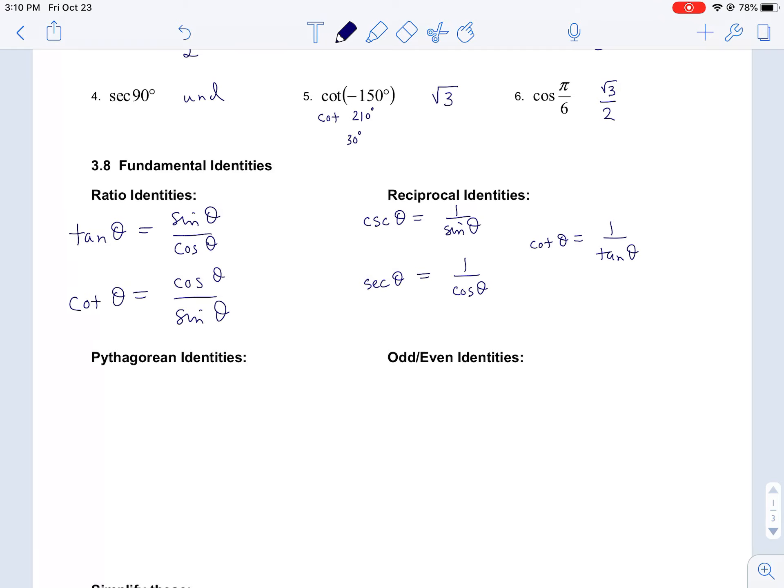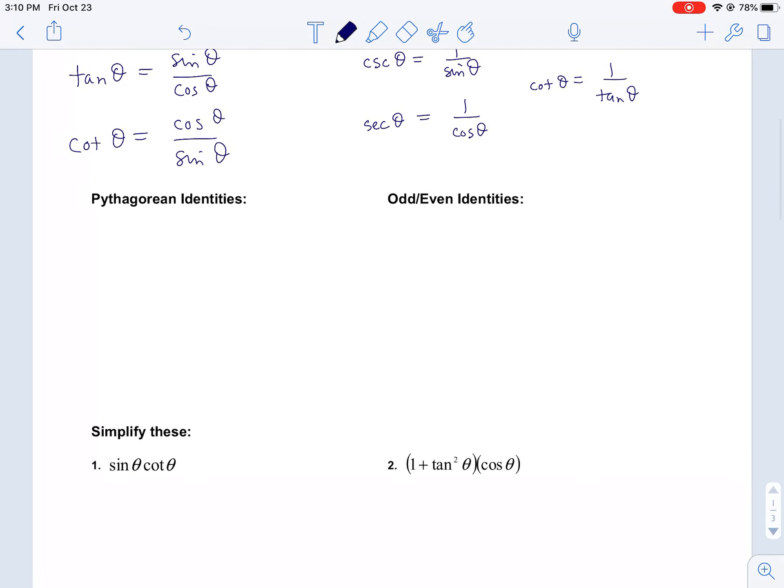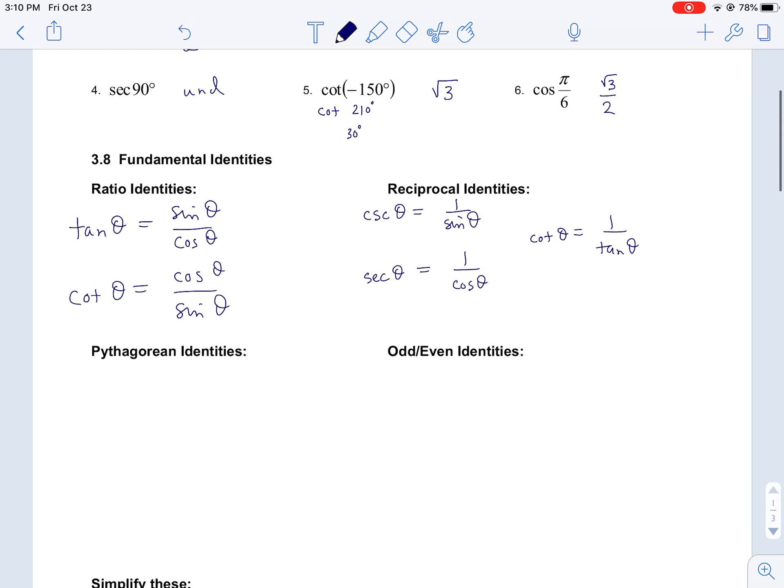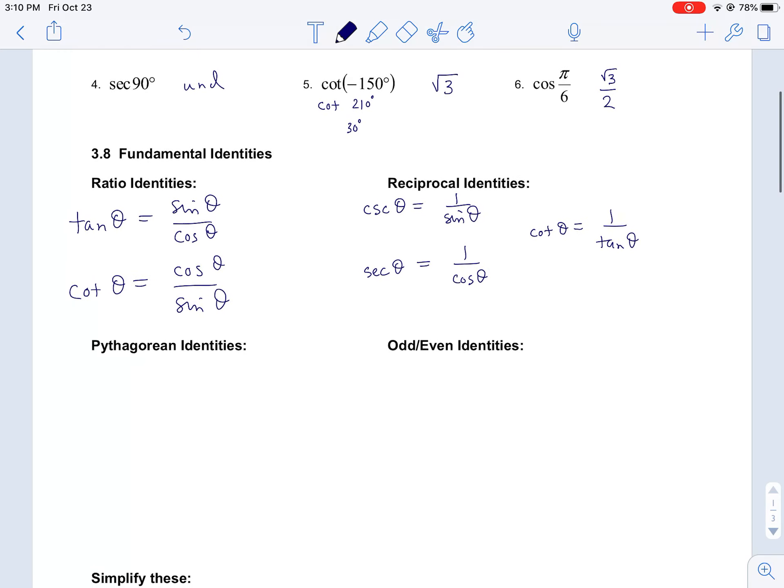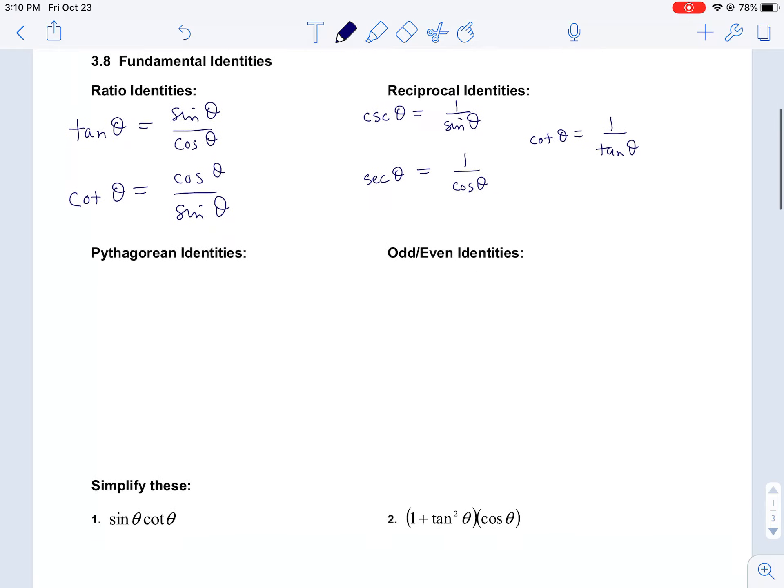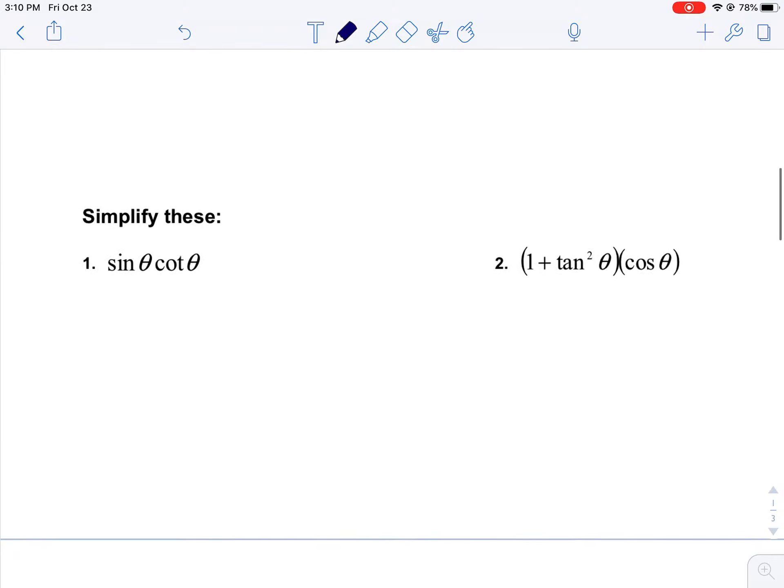Of course you're going to see in a minute how we use these. For now just kind of copy down these identities. Actually, you know what, I'm going to stop there. We'll do the Pythagorean identities in a minute. Let's look at an example of how we would use this. Example one says sine θ times cotangent.